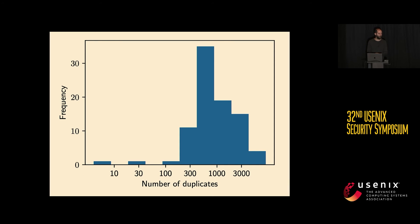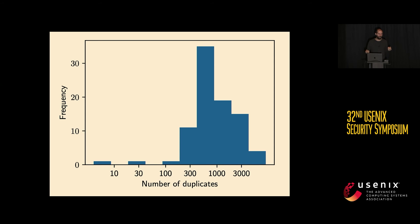The main cause of memorization looks like it is repeated training data. If you count the number of times the extracted images are repeated in the dataset, most of them are repeated a couple hundred times. But we still don't fully understand this, because there are actually a lot more images repeated thousands of times that aren't memorized, and there are some images we can extract that are repeated only a handful of times. We don't actually understand why some images repeated a thousand times are not memorized, but some repeated a handful of times are — maybe there's some better similarity metric needed.